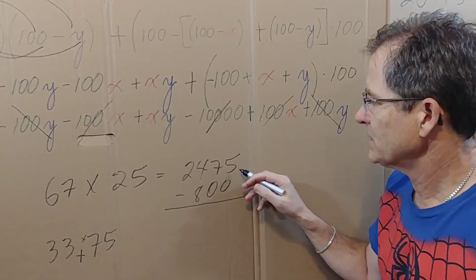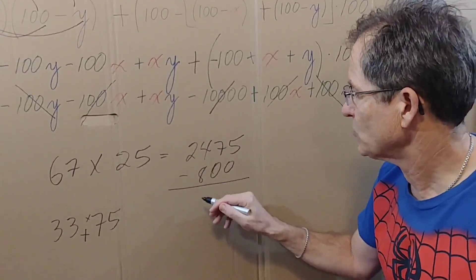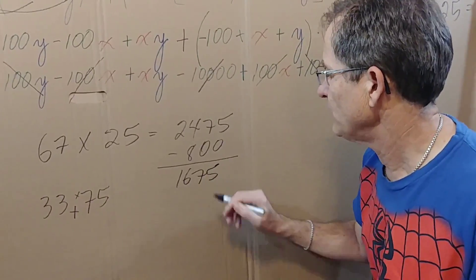I can't write on top of this number, so I have to write it below. And if I subtract, I get 1675.